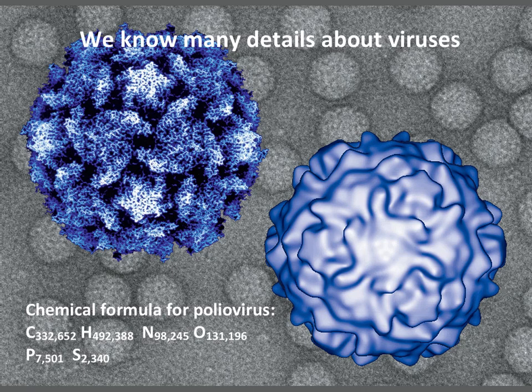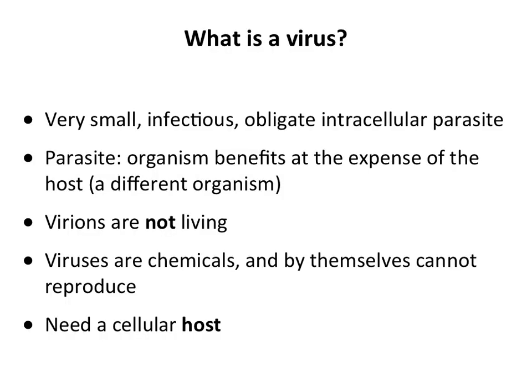We know a lot of details about viruses now. We know three-dimensional structures of many viruses — this is a model of the three-dimensional structure of poliovirus, the virus I've worked on for many years. These are models where you derive the XYZ coordinates of every amino acid and every atom in the particle, then use a computer to build the model — at different resolutions. The surface of the particle is not smooth; it has shapes that have biological functions. We even know the chemical formula for polio: we know the sequence of the genome, and from that we can determine the number of carbons, hydrogens, nitrogens, oxygens, phosphorus, and sulfur.